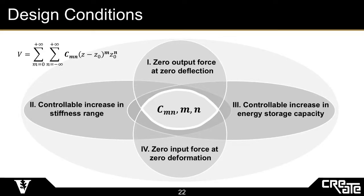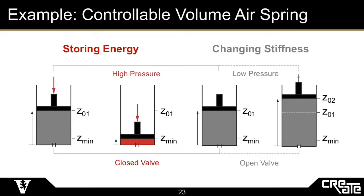After performing this analysis, we actually found that a controllable volume air spring exhibits this desired behavior. Increasing the volume of air at atmospheric pressure in the chamber of an air spring increases the total energy storage capacity and the stiffness range. Increasing the volume at atmospheric pressure ensures negligible work is being done to change the stiffness, since the chamber and the environment are at equilibrium. And analytically, the air spring model satisfies all four design conditions.